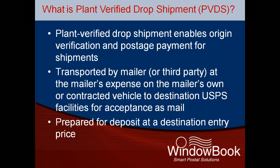To facilitate the process of drop shipping, the Postal Service offers a program called Plant Verified Drop Shipment, or PVDS. This program allows for the mail to be verified and paid for at the origin post office, rather than at each individual additional entry office. The mail is then transported at the mailer's expense to the destination postal facilities, where it is accepted as mail already verified and paid for. There are specific rules and regulations for preparation, including a clearance document called Form 8125. This form is completed by the mailer, signed and dated by the postal clerk when the mail has been verified and paid for, and travels with the drop shipped mail. At the destination post office, the 8125 form provides proof that the mail has already been verified and paid for at the origin office.